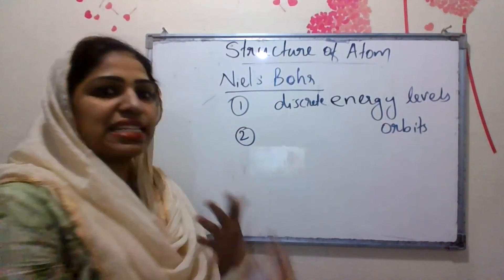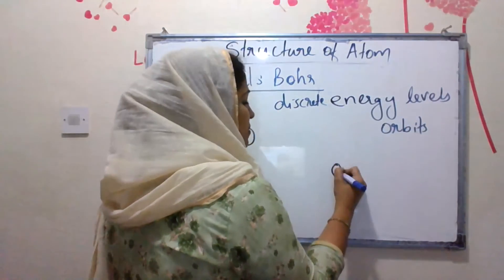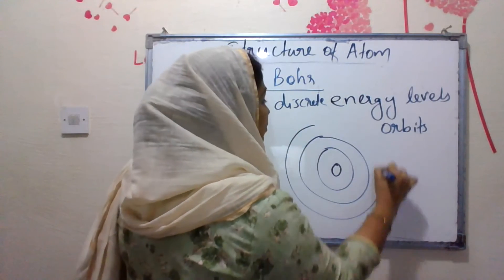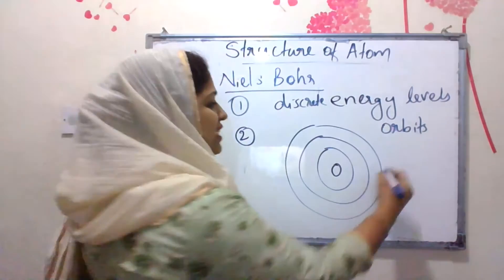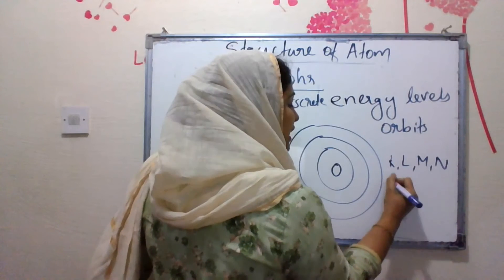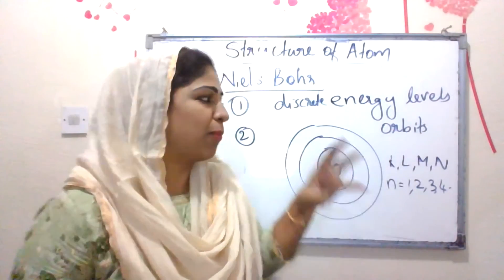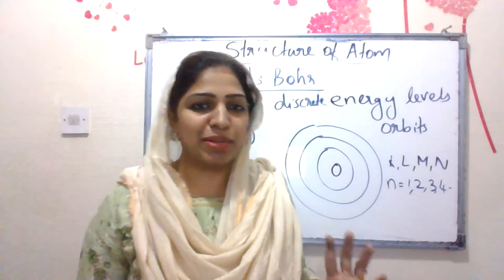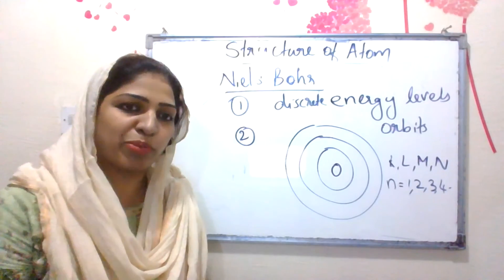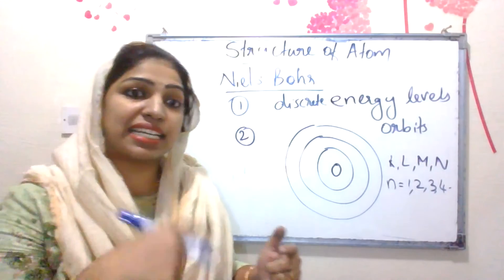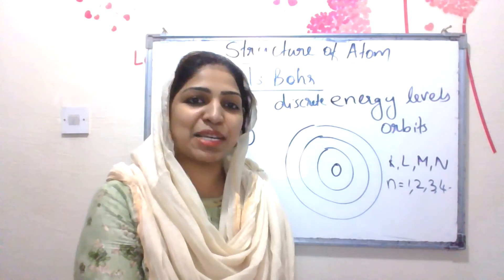Electrons can revolve only in certain permitted energy levels — discrete energy levels — and they cannot lose energy in these orbits. These fixed energy levels are called orbits or shells. We call them K, L, M, N shells, corresponding to n = 1, 2, 3, 4. At these discrete energy levels, there will not be any radiation of energy. This is how Niels Bohr could successfully explain the stability of the atom.